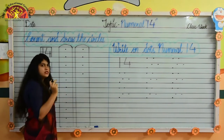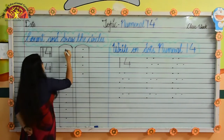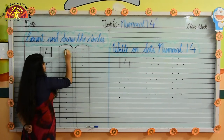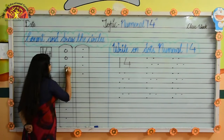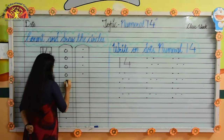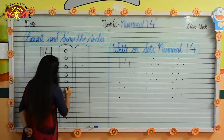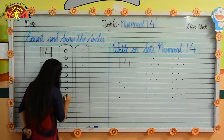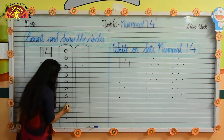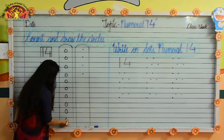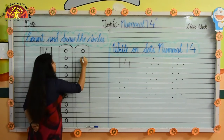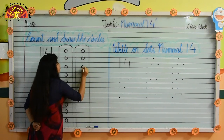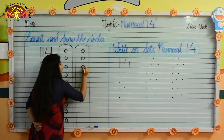So kids, speak and draw the circles. 1, like this, 2, 3, 4, 5, 6, 7, 8, 9, 10, 11, 12, 13, 14. Kids, speak with me. 10, 11, 12, 13, 14.